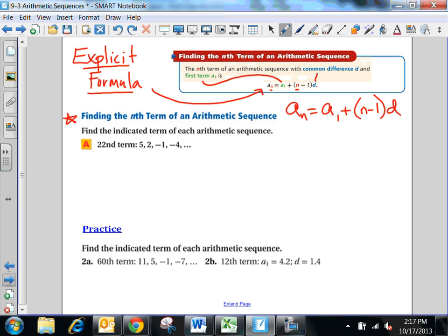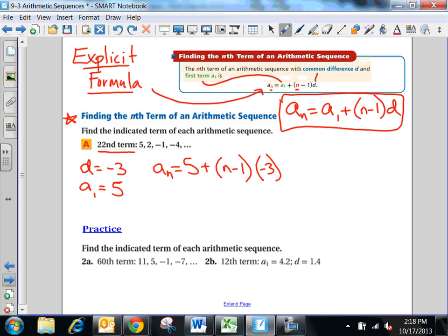So this first problem says find the indicated term of each arithmetic sequence. So this wants us to find the 22nd term of the sequence that starts by going 5, 2, negative 1, negative 4. So we need two things. I need to know d. That's the common difference. And I need to know a1. That's the first term. I know a1 is the first term. It's 5. That's already given to me. And I know that d, the common difference, what's it going down by every time? And subtracting 3. So all I need to do is fill into this formula right here. I need to fill in for d and a1. So my formula, my explicit formula would be this. an equals 5 plus n minus 1 times negative 3. And that's multiply.